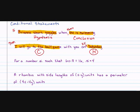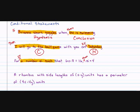Let's take a look at the next one: for a number x such that 6x minus 8 equals 16, x equals 4. If a number x such that 6x minus 8 equals 16, then x equals 4. That makes sense. So our hypothesis is a number x such that 6x minus 8 equals 16, and our conclusion is x equals 4. In this case, the hypothesis comes first and the conclusion comes second.